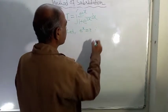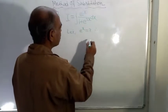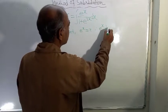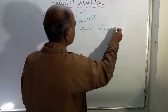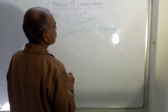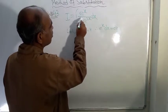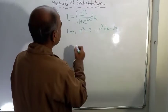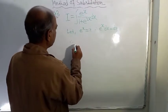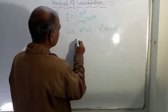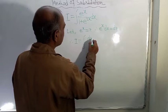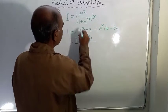Then on differentiating both sides, you will get e to the power x dx equals dz. And in the numerator you can see that e to the power x dx is there, so instead of e to the power x dx we can write dz.